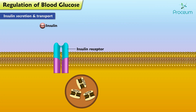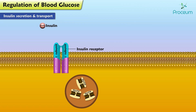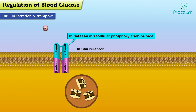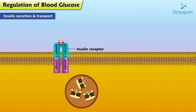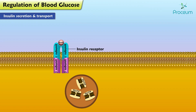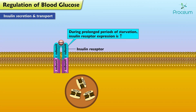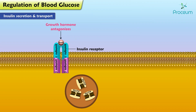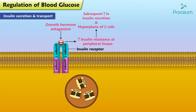The insulin receptor is a tetrameric intrinsic tyrosine kinase receptor consisting of two alpha and two beta subunits. It is found on the target tissues of insulin and initiates an intracellular phosphorylation cascade when it binds insulin. When a target cell is stimulated by insulin, it down-regulates the insulin receptor in response. Accordingly, during prolonged periods of starvation, insulin receptor expression is increased. Growth hormone antagonizes insulin action, which increases insulin resistance at peripheral tissues, leading to hyperplasia of beta cells and a subsequent increase in insulin secretion.